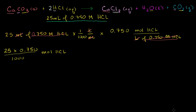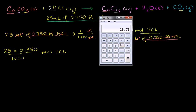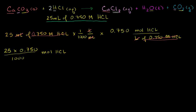Using a calculator: 25 × 0.75 ÷ 1,000 = 0.01875. Keeping three significant figures, that is 0.01875 — or rounded to three significant digits, 0.0188 moles of hydrochloric acid. Now we know that for every two moles of hydrochloric acid we need one mole of calcium carbonate.